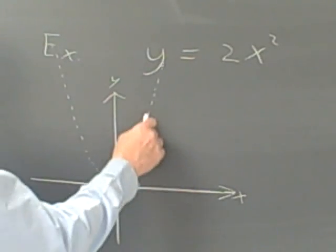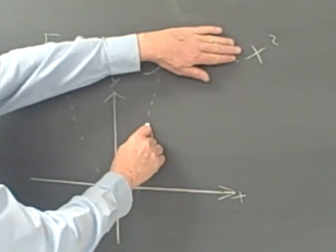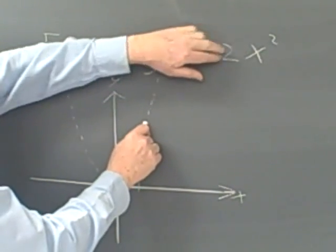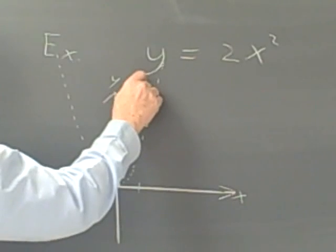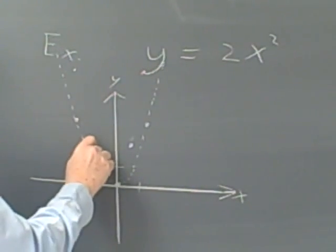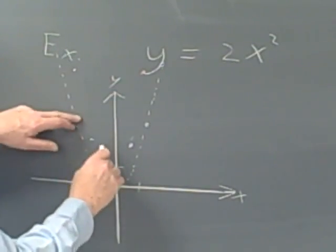And if I put in another point into my x squared before I multiply it by 2, I'll get points on this curve. But then, when you multiply them by 2, they become twice as high. If I take this point, it's going to be twice as high. This point, twice as high.